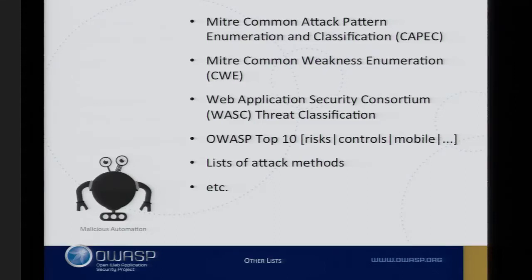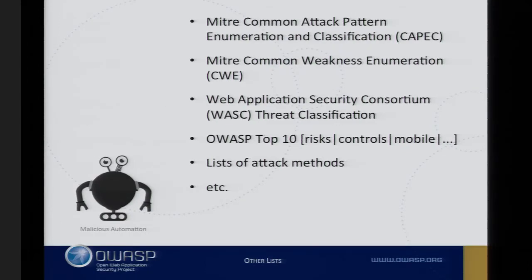You might ask whether some of this already exists. There might be some things where you think these automation attacks already appear in existing lists. But if you actually look through them, they don't really adequately address these issues. OWASP lists and other more specific exhaustive classifications also don't really have these enumerated. But I included all of these in my reading and research.